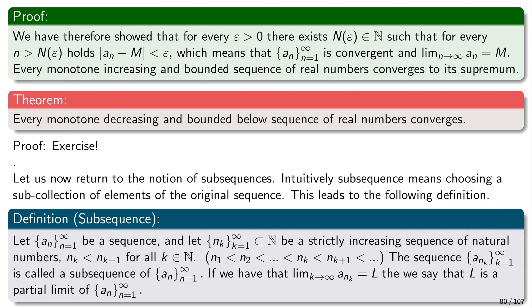So we can select parts of the sequence. We could, for example, select a_1, then a_100, then a_350, then a_10000, etc. So in each such selection — when we look at a subsequence, a sub-collection — we look at a monotonically increasing sequence of indices. The indices themselves form a sequence of natural numbers that is strictly increasing, and this sequence is called a subsequence of a_n.